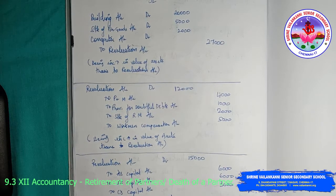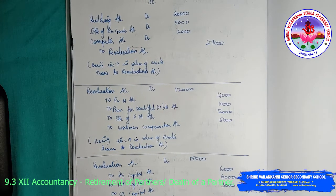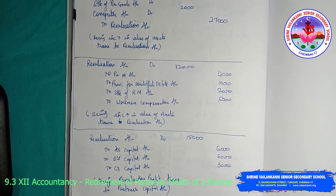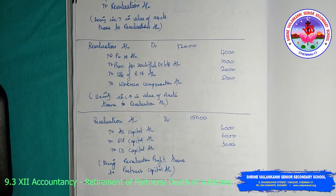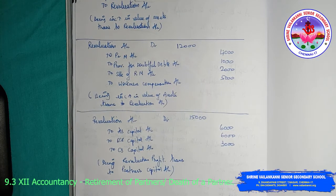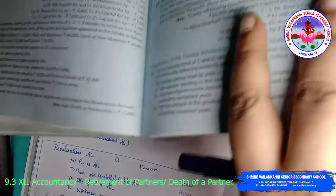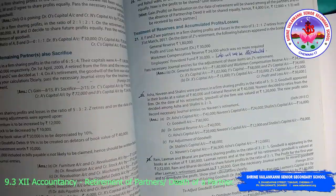Being revaluation profit transferred to partners' capital accounts. This is how you write the journal entry. The next topic we are going to look into is the treatment of reserves and accumulated profits and losses.